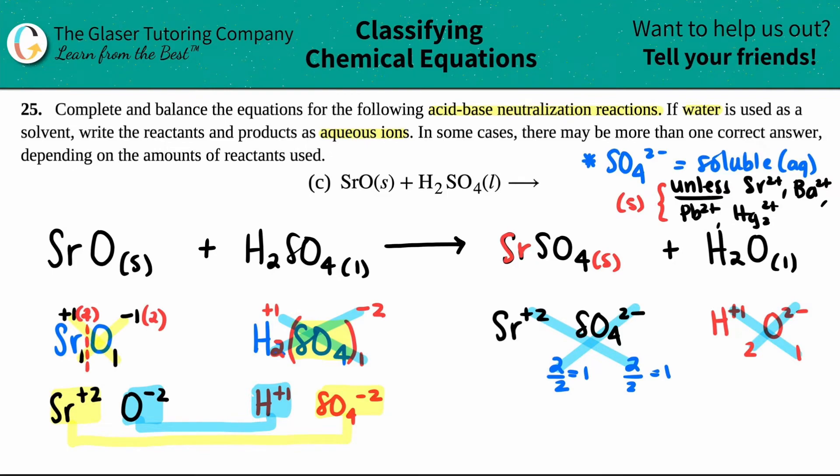They told us, if water is used as a solvent, write the reactants and products as aqueous ions. I do have water as a liquid. So I just have to see if I have any aqueous materials here. But no, I don't. I have a solid, I have a liquid, I have another solid, and I have water. There's no aqueous guys here. So technically, I can't break anything down. This solid that we formed was called the precipitate.